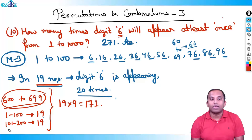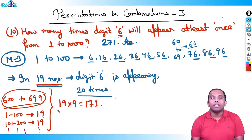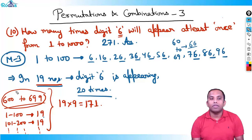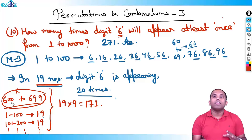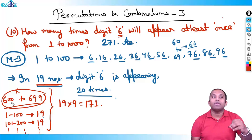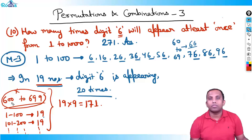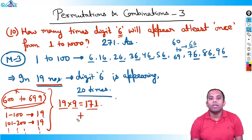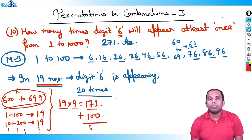Plus, from six hundred to six ninety-nine there are one hundred numbers where digit six appears in every number. So the total is 171 plus 100 = 271. That is the answer — 271 — which matches the previous methods.